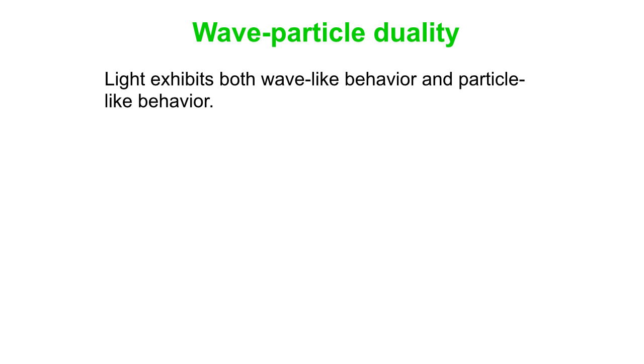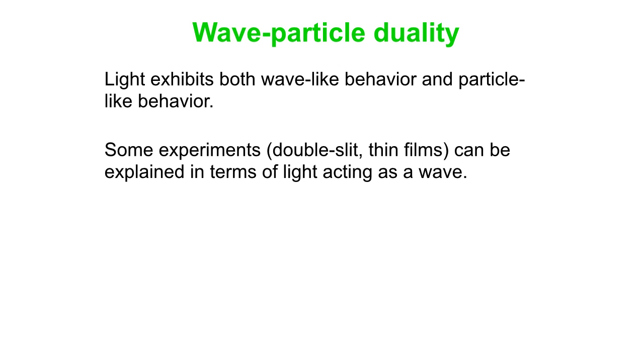We have kind of seen the opposite of that - light exhibiting both wave-like behavior and particle-like behavior depending on the situation. We've got some experiments such as the double slit or thin film interference that can be explained in terms of light acting as a wave.